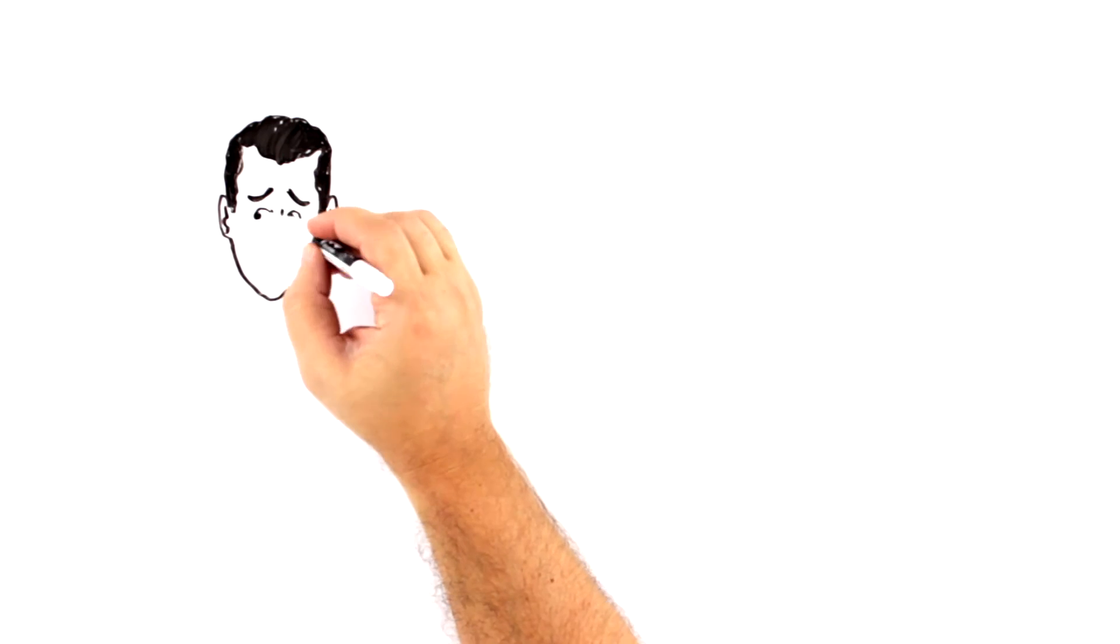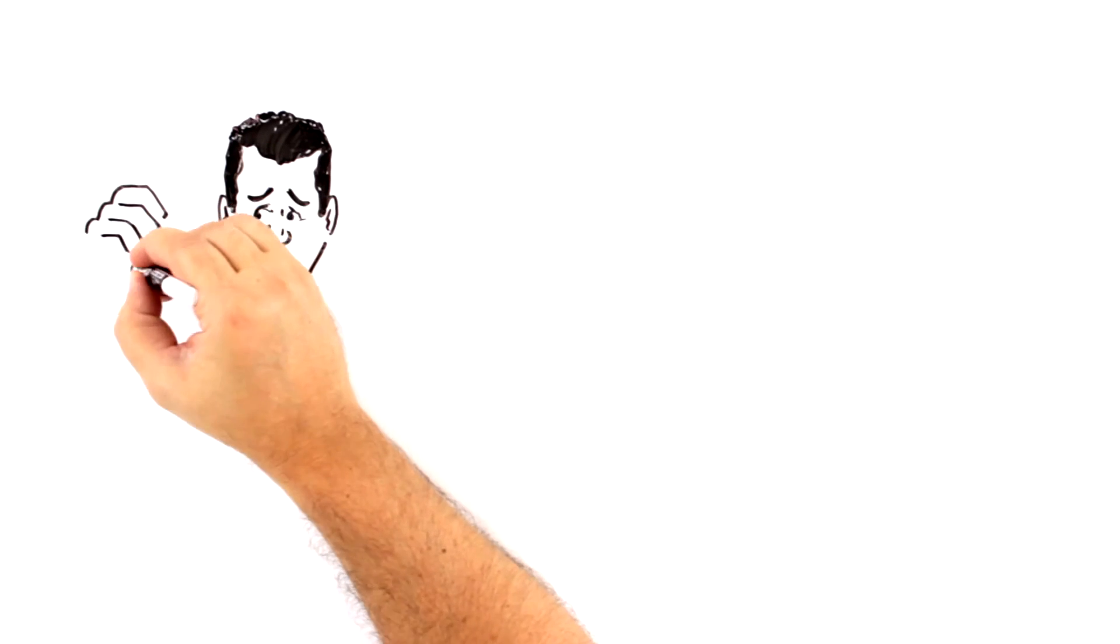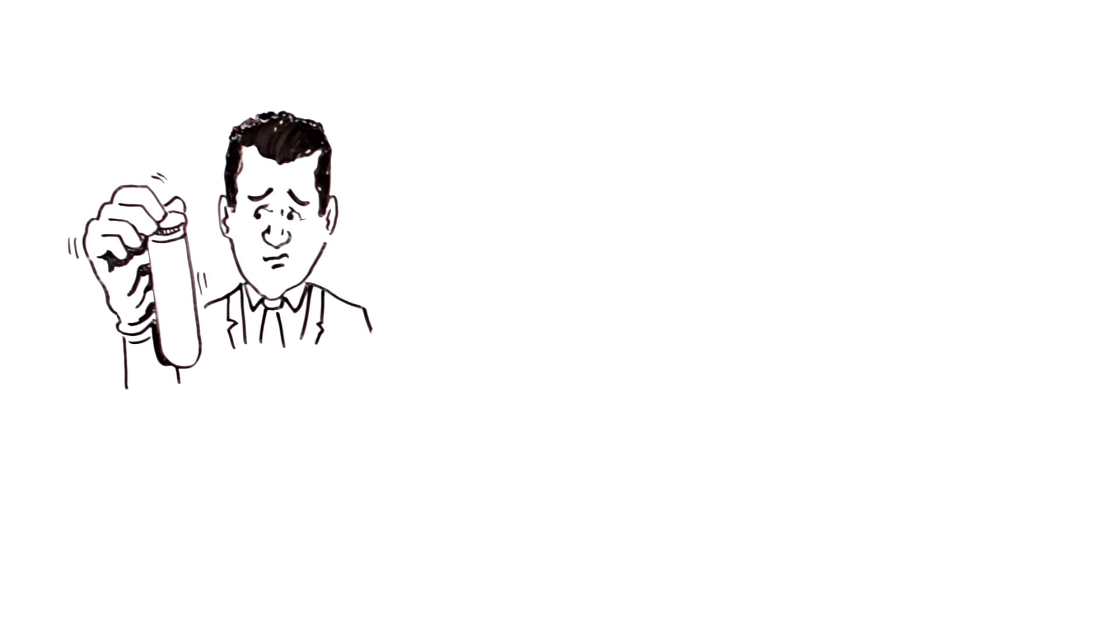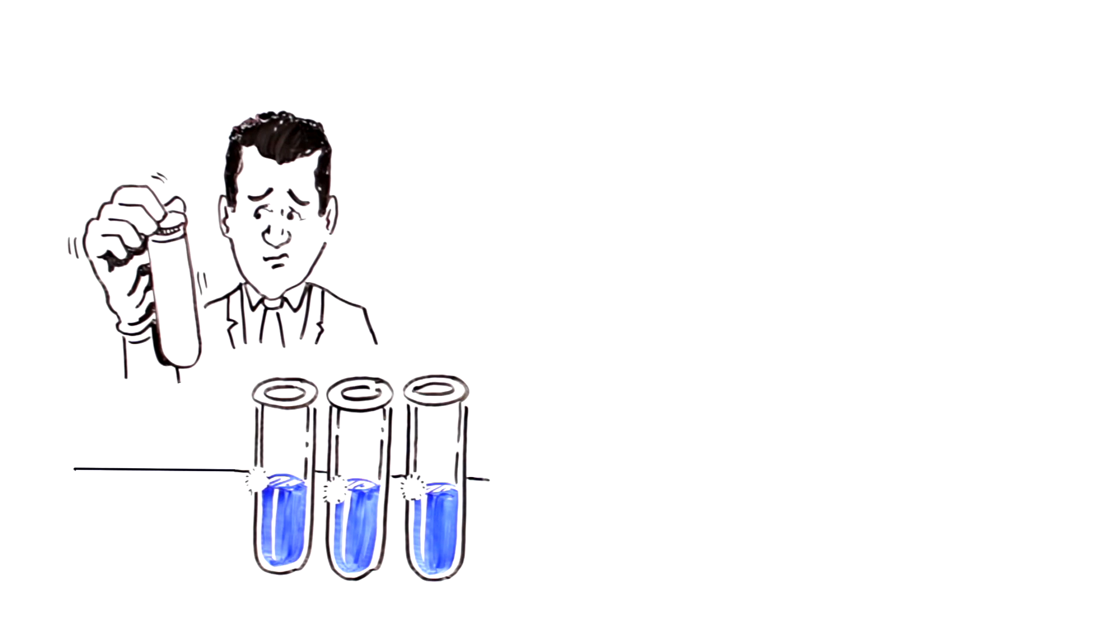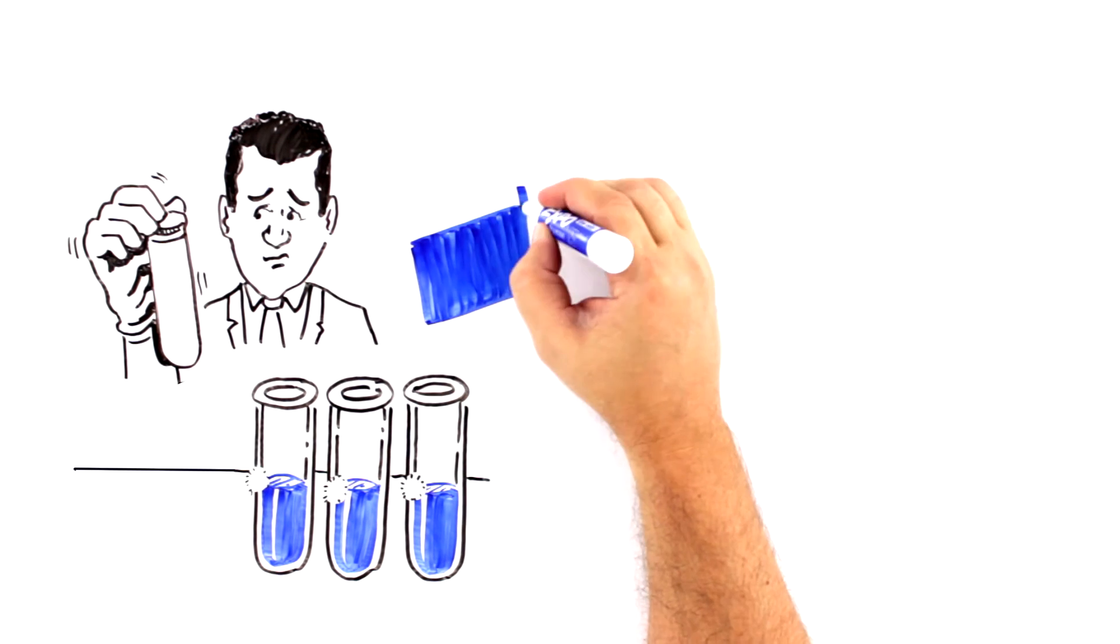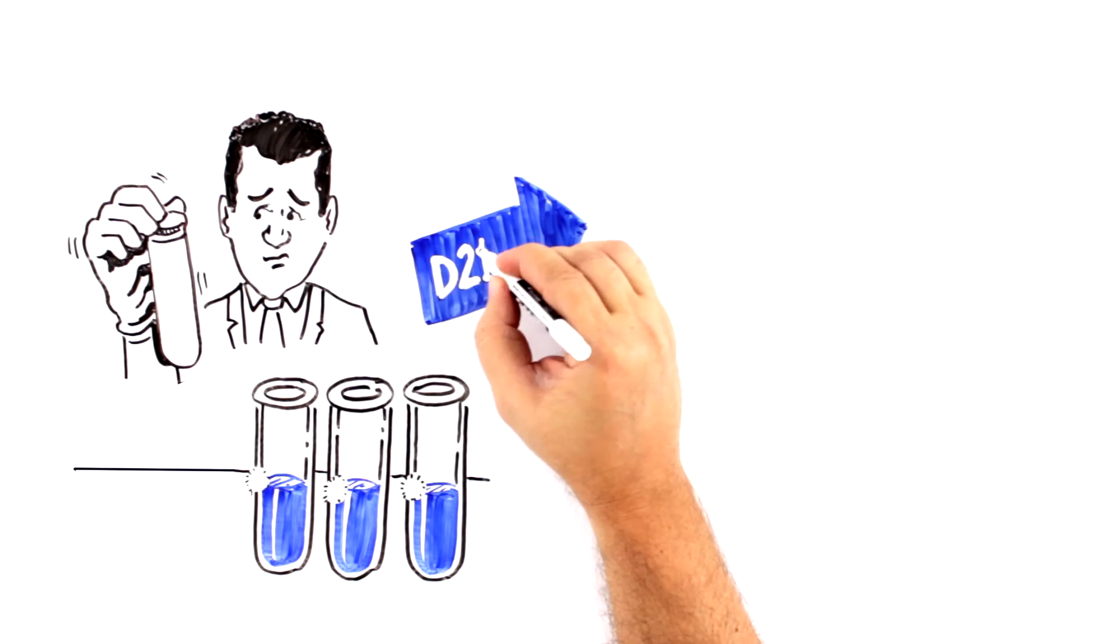The remaining clones were further tested using positive and negative cell lines. Only four showed robust, clean, specific staining. Not satisfied, the CST scientists subjected the few remaining clones to another round of testing using positive and negative cell lines. And only the most specific, named D21H3, made the final cut.